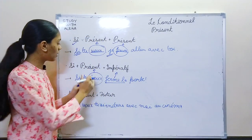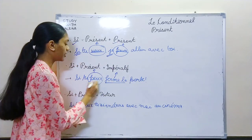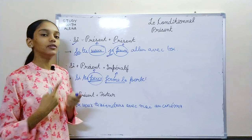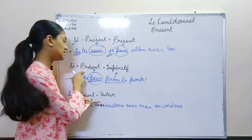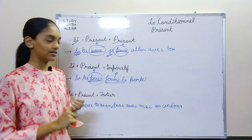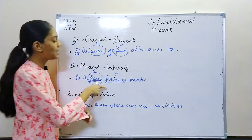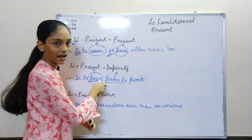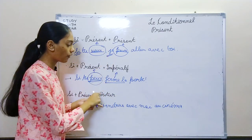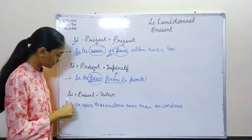If you are given ferme la porte and peux is a blank, you fill it with present — because with imperatif we use present. But if there is present and the second part is a blank, you can use present, imperatif, or future.